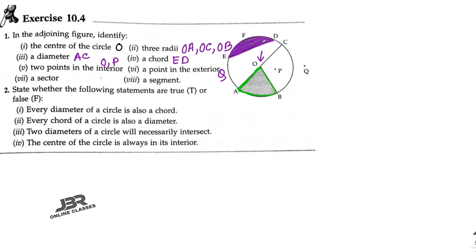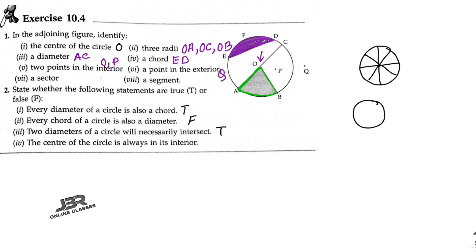State whether the following statements are true or false. Every diameter of a circle is also a chord — true. Every chord of a circle is also a diameter — false, because a diameter is a line passing through the center, and not every chord passes through the center. Two diameters of a circle will necessarily intersect — true, because any two diameters of a circle always intersect. The center of a circle is always in its interior — definitely true.